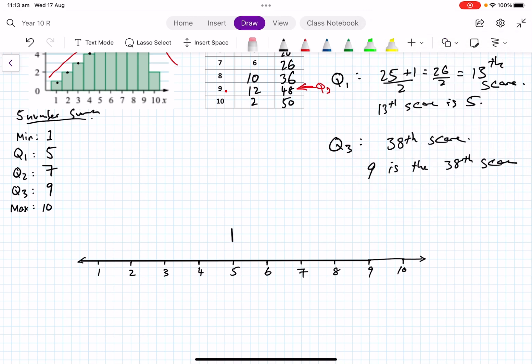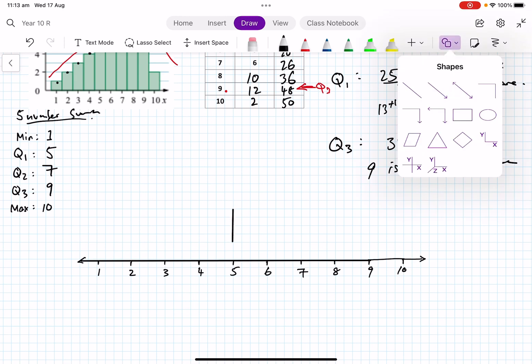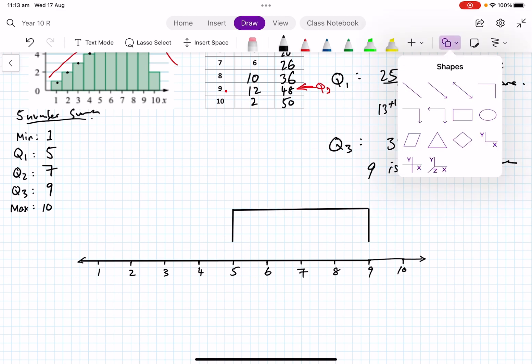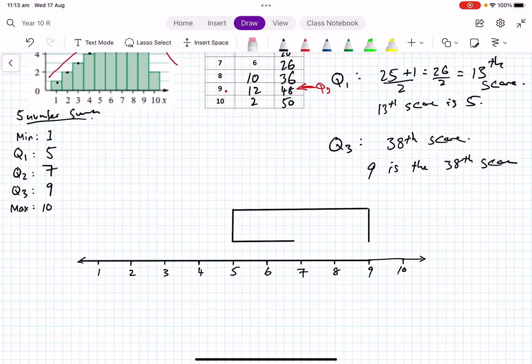Five is my lower quartile. I'm just going to do it up like that, do a line there, then we mark the upper quartile which is nine. Go up here, connect it with a box, hence the box plot. And then we mark the median which in this case is seven, right in the middle.